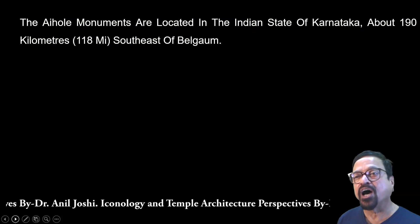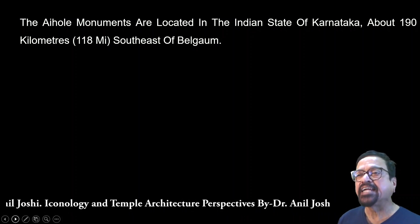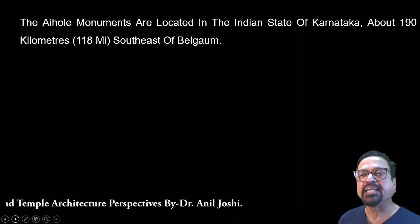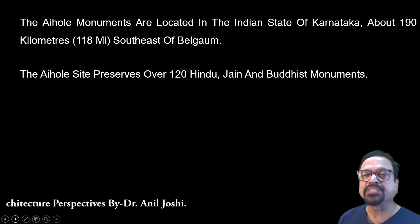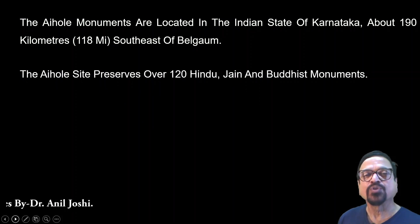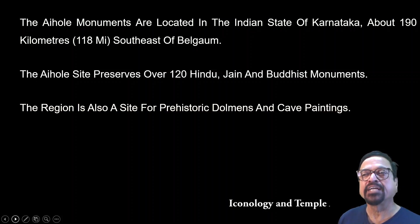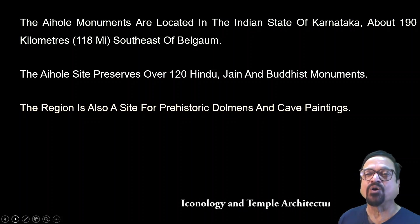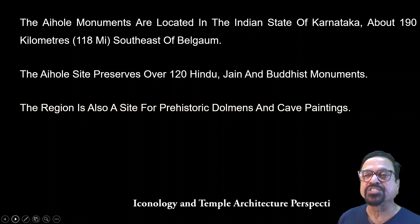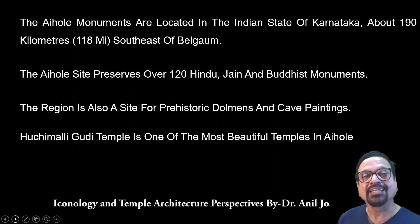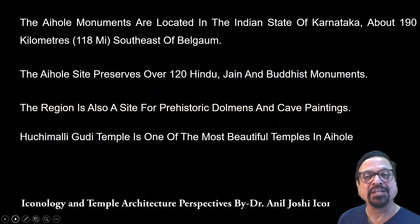The Aihol monuments are located in the Indian state of Karnataka, about 190 kilometers south-east of Belgaum. The Aihol site preserves over 120 Hindu, Jain, and Buddhist monuments. It is important that all religions were respected in this area by the kings, and all of them have well-preserved monuments. The region is also a site for prehistoric remains and cave paintings. Do visit it, or see our other videos covering all these things.